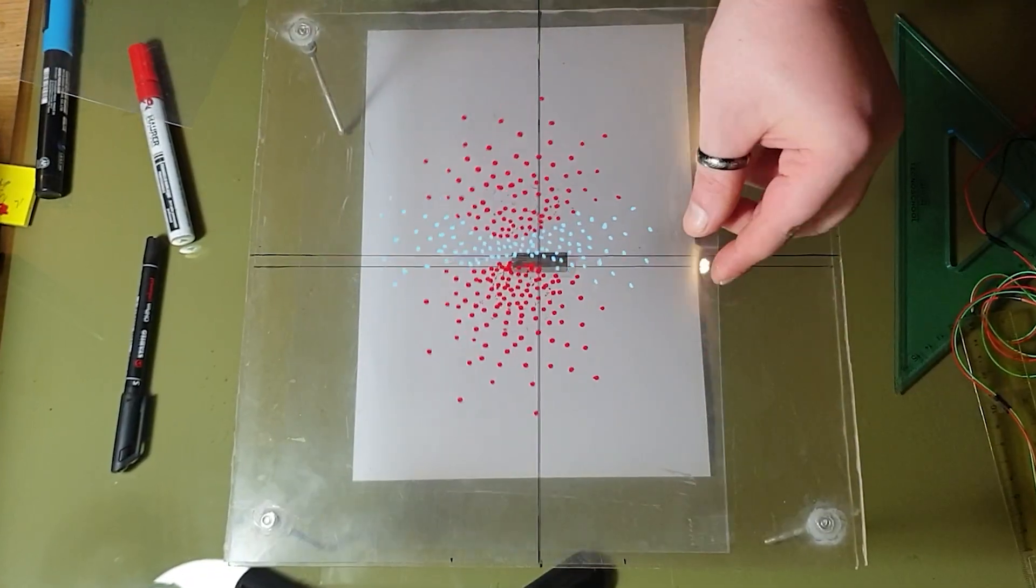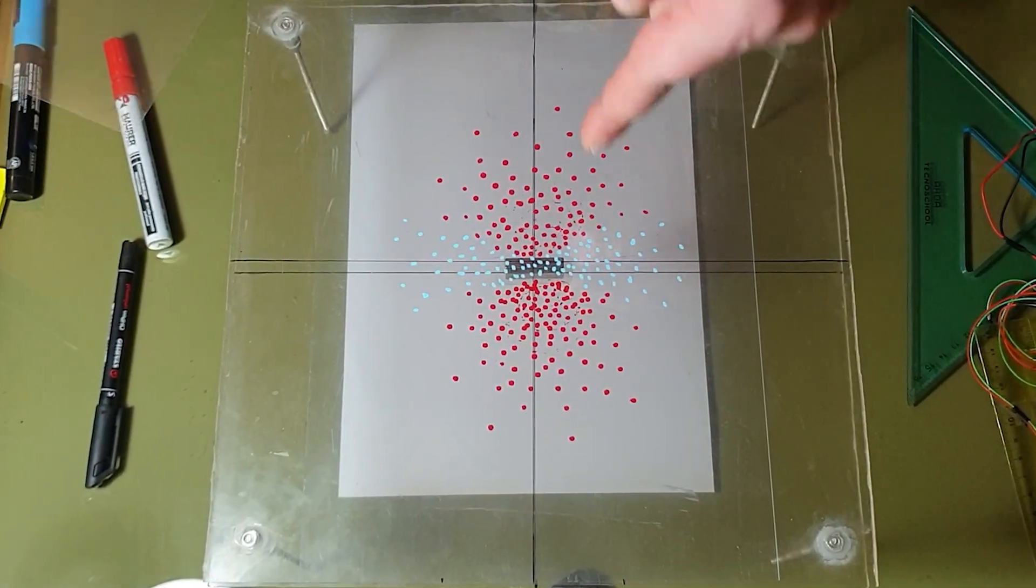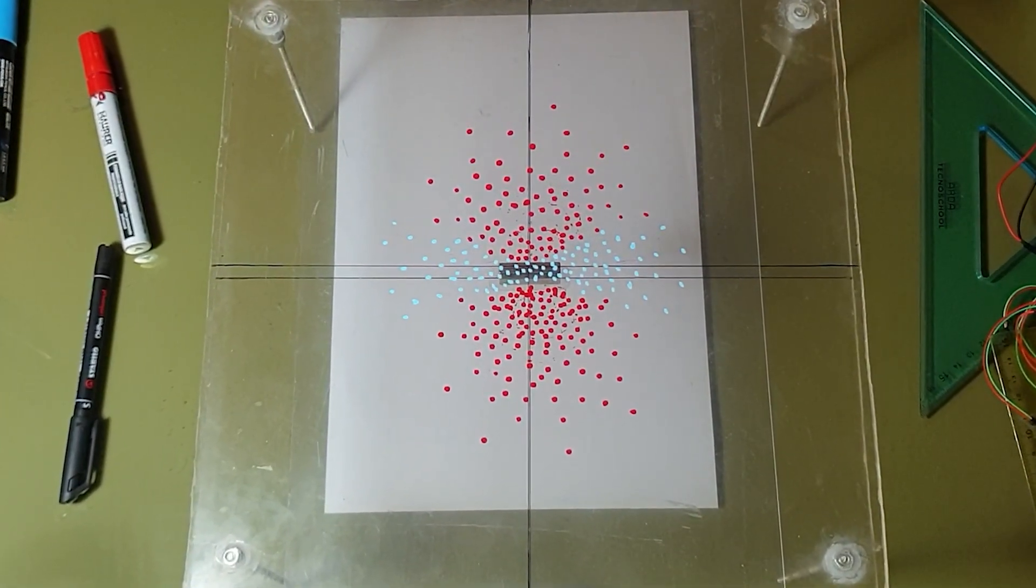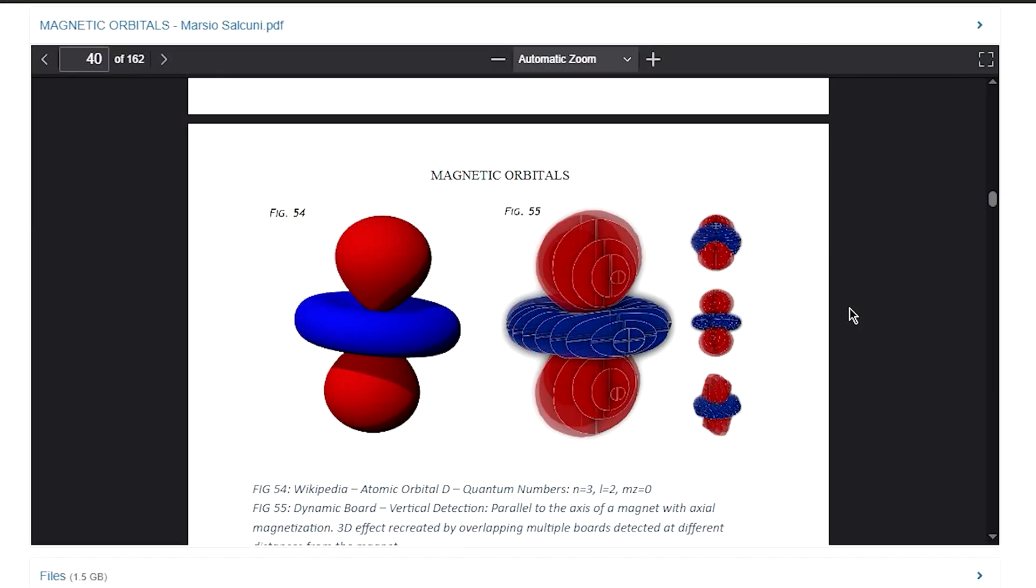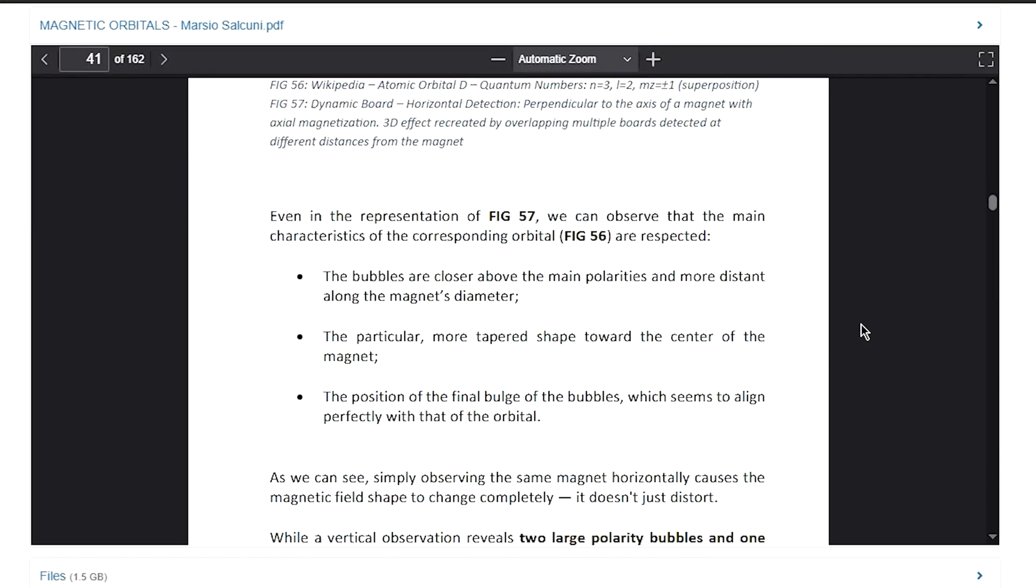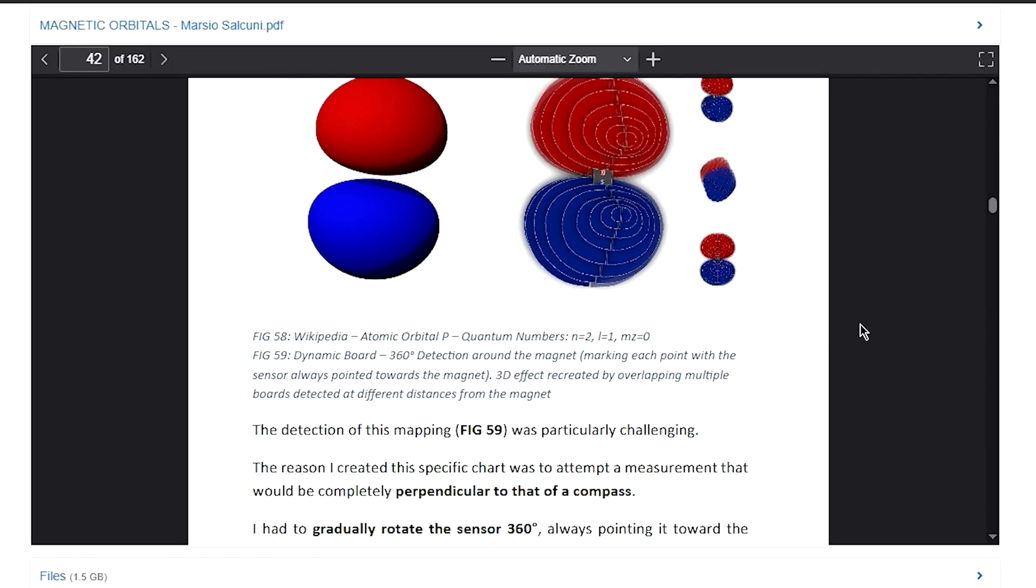This means that every point in space becomes a discrete state, and by accumulating thousands of these points, we don't get a messy, confused map, but well-defined figures that perfectly reflect all the atomic orbitals described by quantum mechanics.